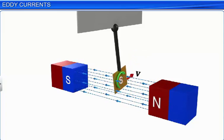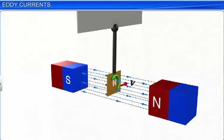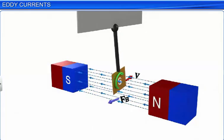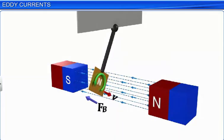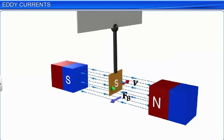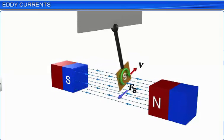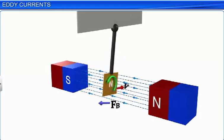The induced eddy current always produces a retarding force, Fb, when the plate enters or leaves the field. This retarding force slows down the swinging of the plate and eventually brings it to rest. Thus, the oscillations of the plate are damped.